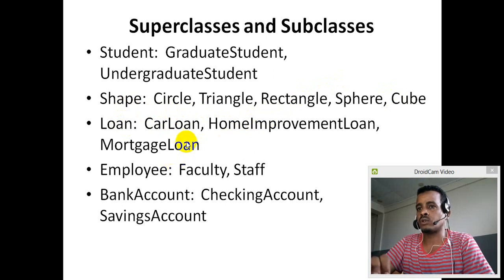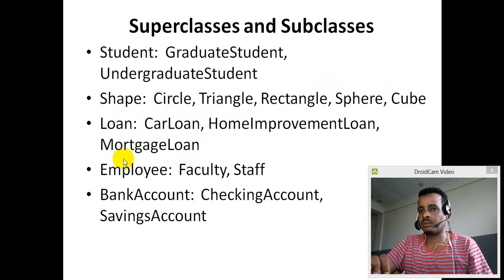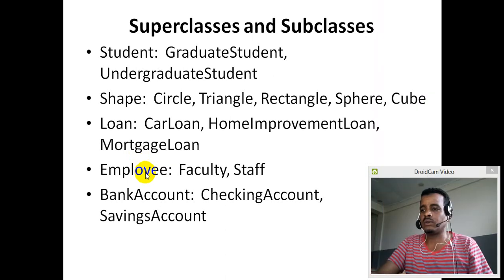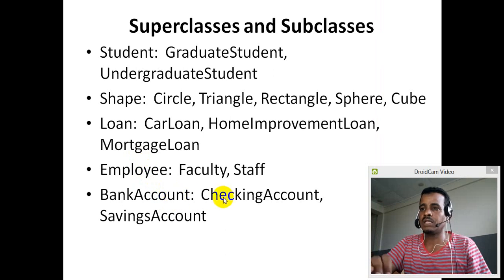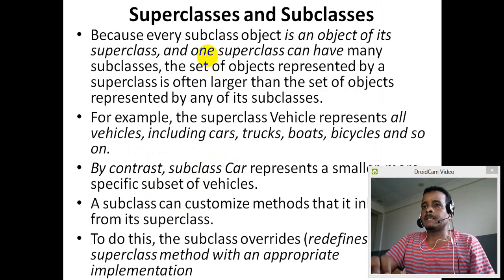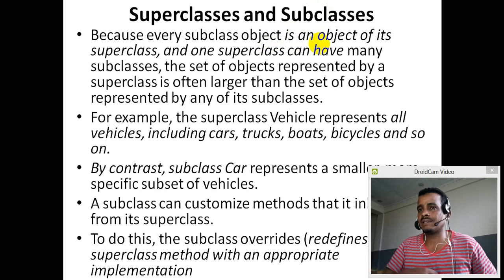Home improvement loan and mortgage loan are also subclasses. Employees, faculty, staff are subclasses of employee. If you have a bank account, checking account and saving account are subclasses of bank account. Because every subclass object is an object of its superclass, and one superclass can have many subclasses.